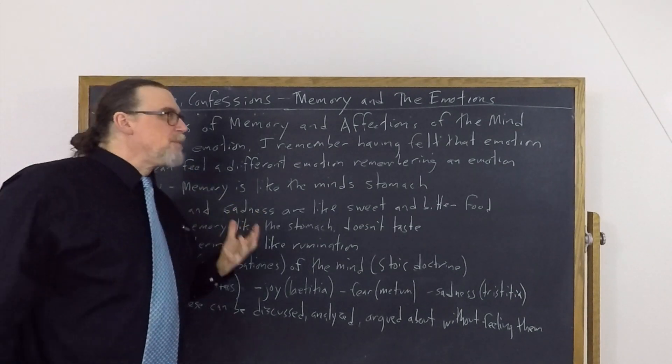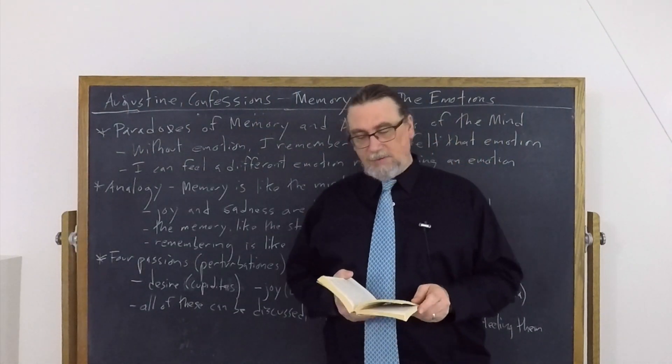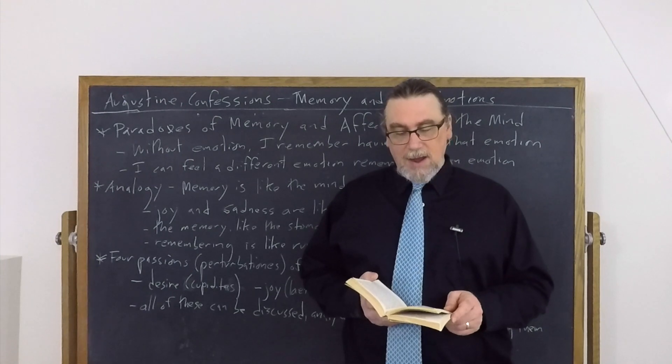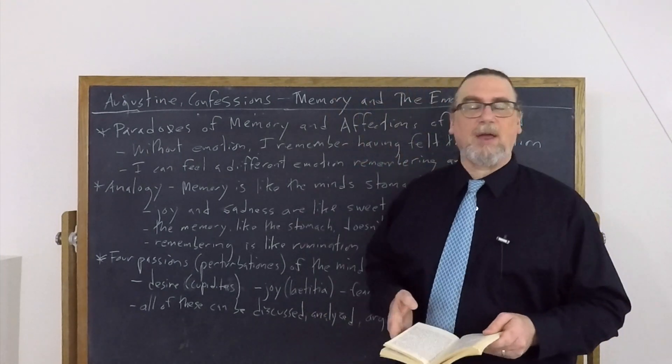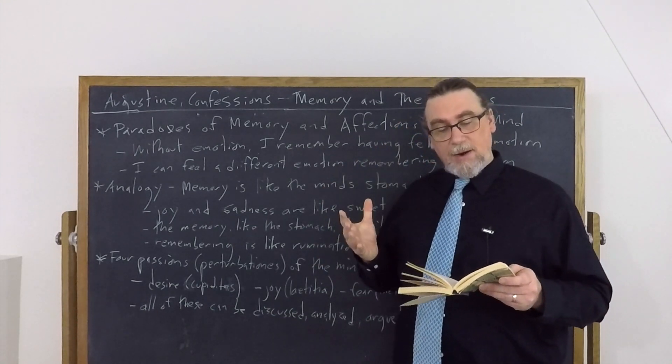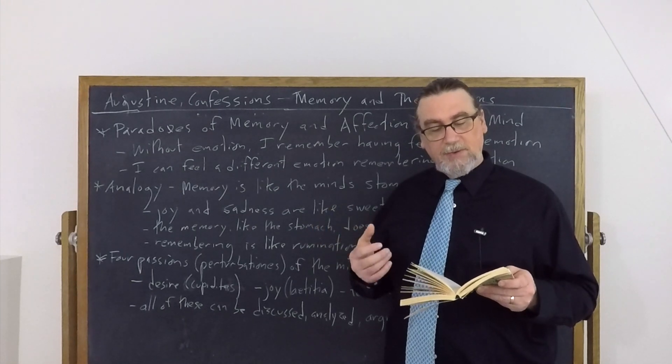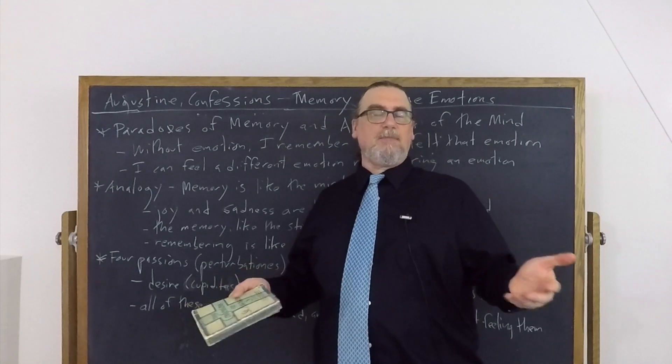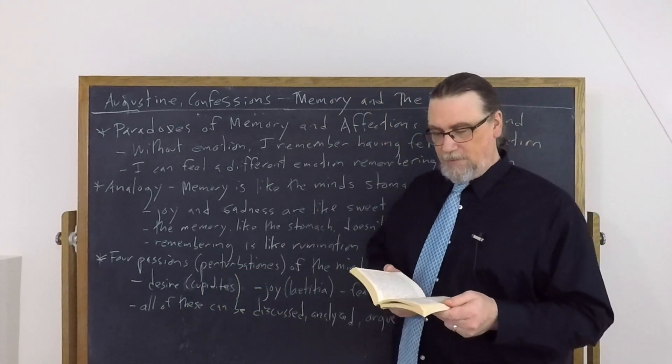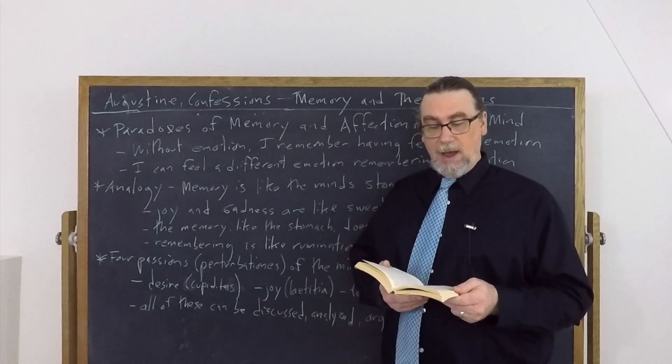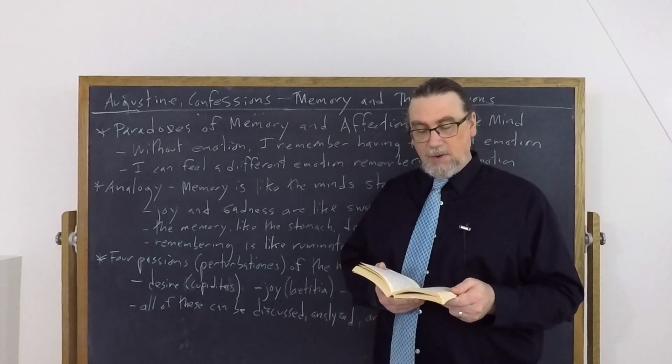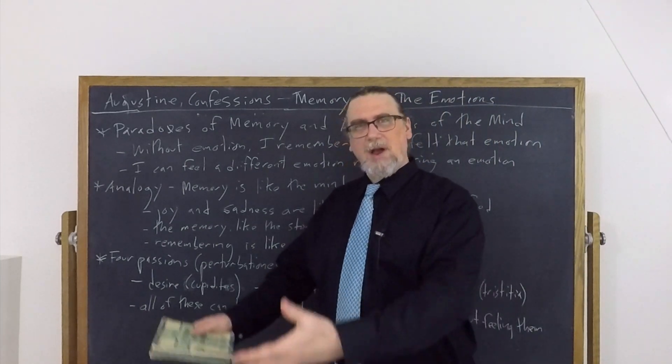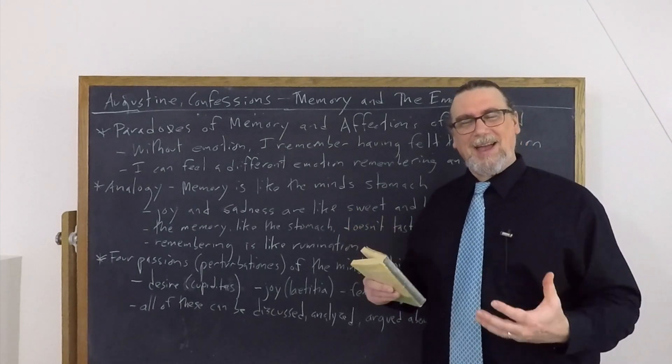So what are some examples of this? He says that without emotion, I remember having felt that particular emotion. He says that the memory contains the affections of my mind, not in that manner in which the mind has them at the time it experiences them, like being angry at the time or sad, but in a very different manner after the fashion in which the power of memory retains memory itself. Without actually being joyful, I remember myself to have been joyful. So I can think about being joyful all I want. That's not necessarily going to make me joyful. Or without actually being sad, I recall my past sorrow. Without fear, I recall that I was at one time fearful. Without desire, I'm mindful of previous desires. So this is kind of strange, isn't it? That we can bring our past emotions, our experiences of these to light, and yet we don't actually feel them.